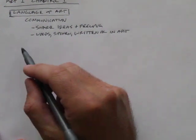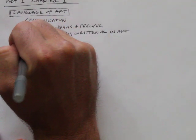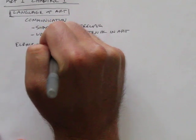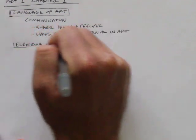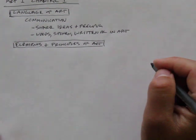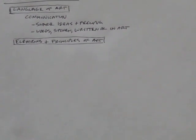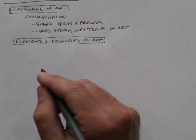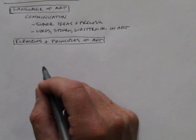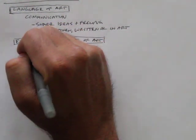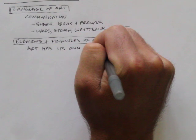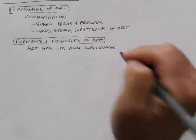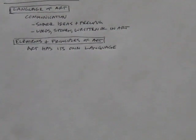We're going to talk about some elements and principles of art. Art has its own language. There are words that we use in art a little bit differently than what you might use them day-to-day in other ways. Just like math has its own language, there are words we use in different ways in art than we do day-to-day in our regular speaking and communication.